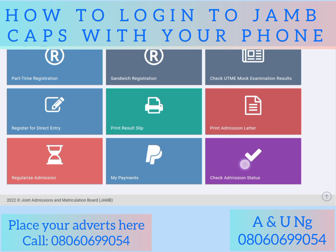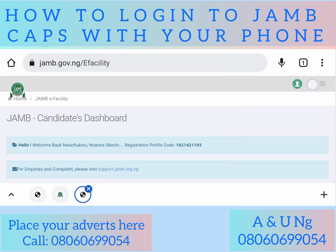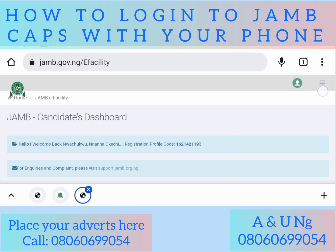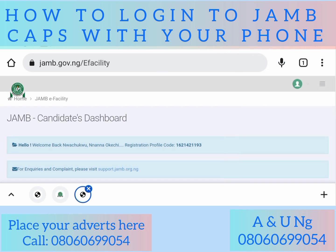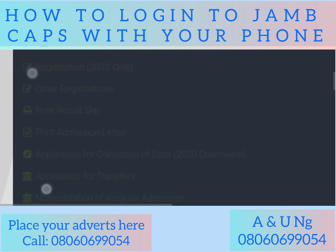Some of you will come here and click 'Check Admission Status,' but if you use that route, you cannot access your CAPS with your phone — only a laptop can be used through there. What you will do instead is come to Options. Take note that we have two options here: the top one is the browser option, while the second one is the JAMB profile or CAPS option.